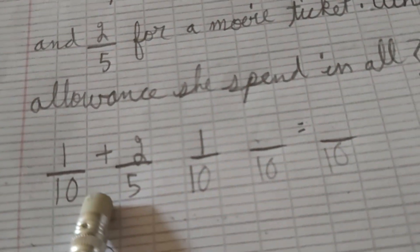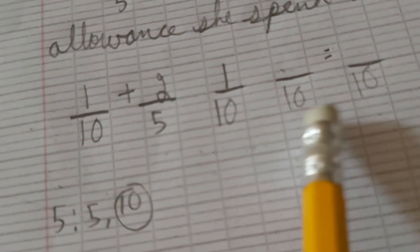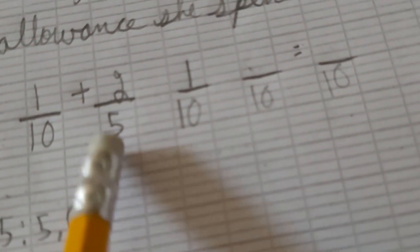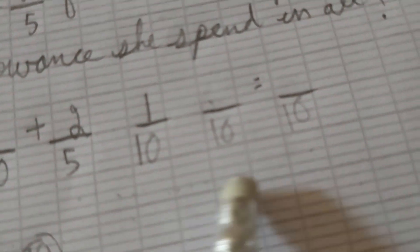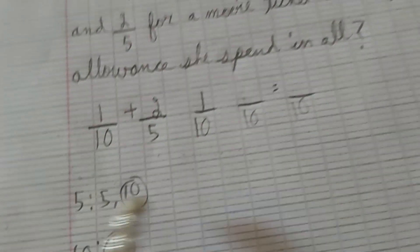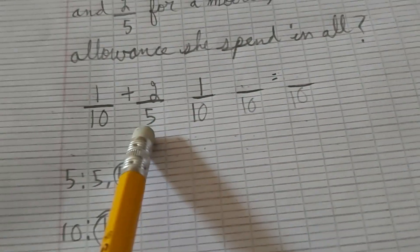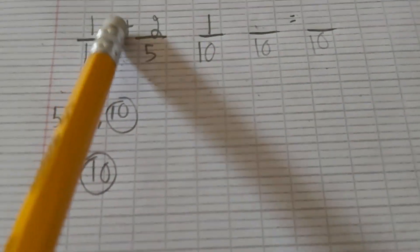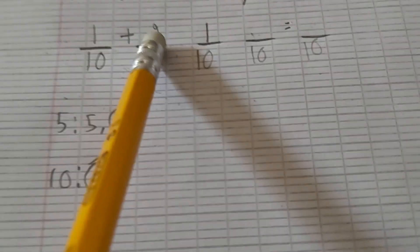10 divided by 5, what gives you 10? It's 2 times 5 because 2 times 5 gives you 10. Now 10 divided by 5 is 2, 2 times 2 is 4. You make plus.